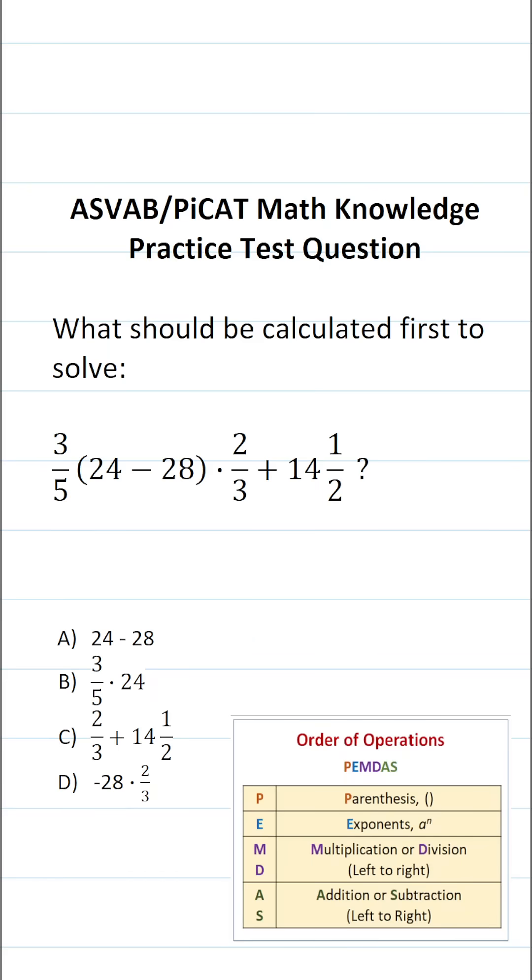This math knowledge practice test question for the ASVAB and PiCAT says, what should be calculated first to solve 3 fifths times 24 minus 28 times 2 thirds plus 14 and a half?